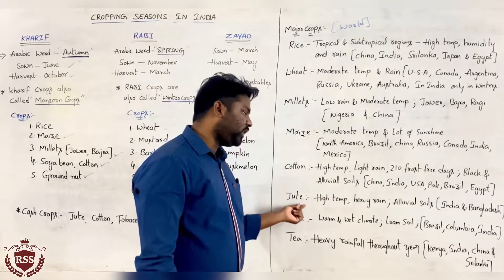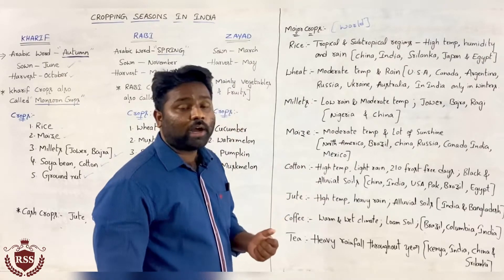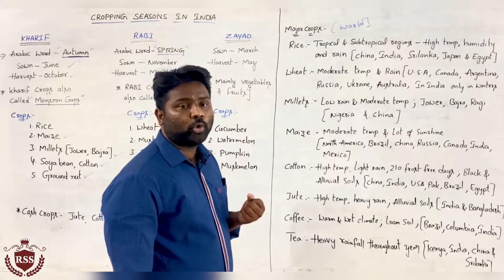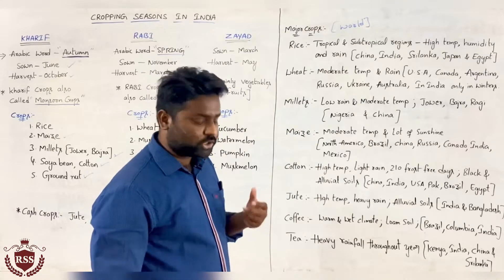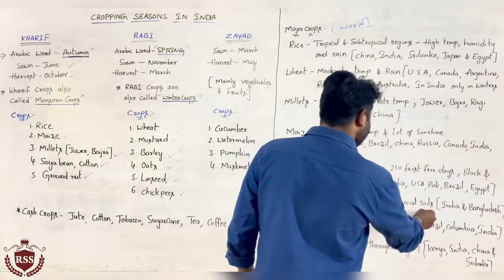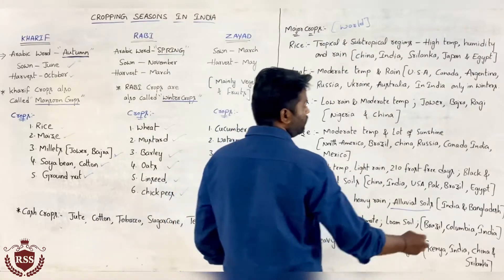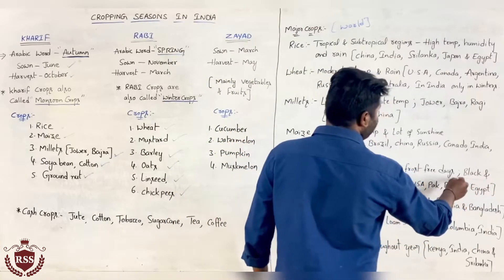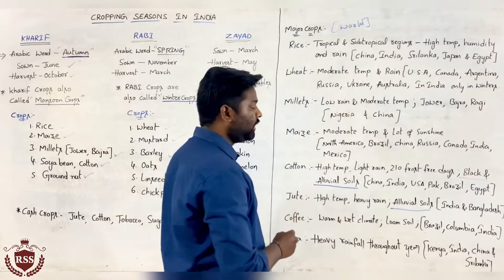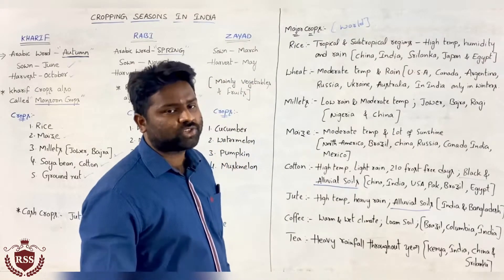Jute is growing in high temperatures with heavy rainfall, and in alluvial soils only jute grows abundantly. For cotton it is black and alluvial soils, but for jute it is alluvial soils. Jute is mostly grown in India and Bangladesh.